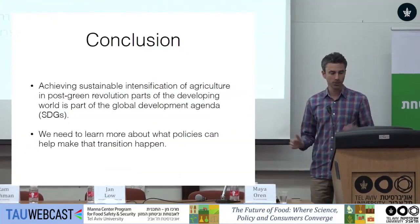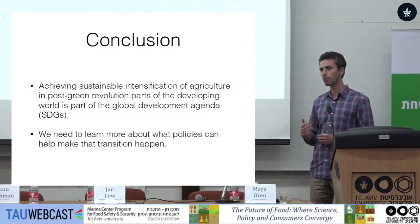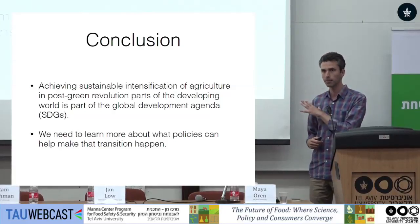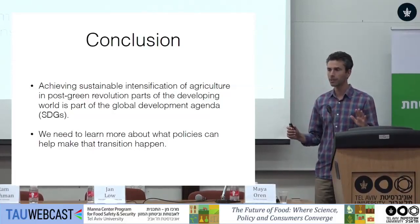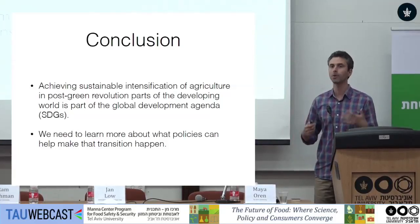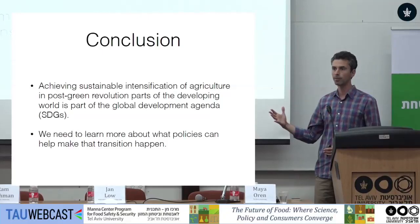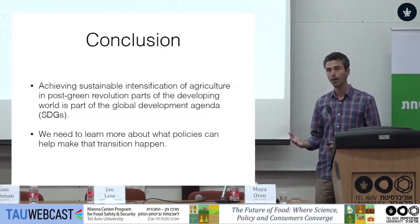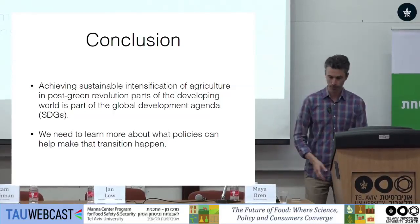In conclusion, we have a major challenge coming up where we need to continue to increase yields but really improve the environmental efficiency of production, especially in places like India, China, and some parts of Latin America. Not in Sub-Saharan Africa — I don't think efficient use of water or nitrogen fertilizer is our primary concern there; let's first get farmers to actually use these inputs where yields are very low. We need much more evidence to help us understand what kind of policies and interventions can help farmers make those choices. Thank you.